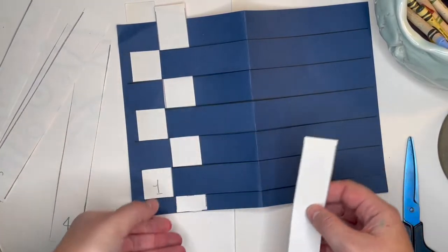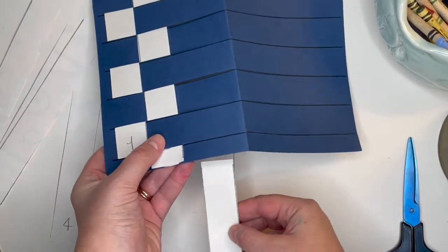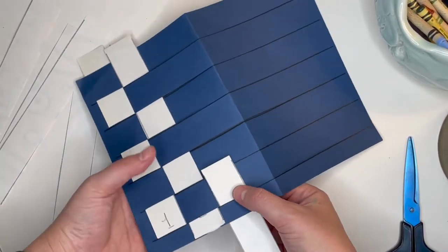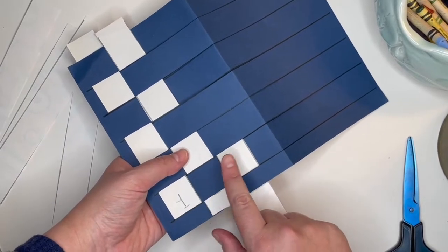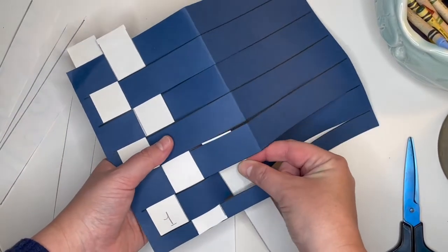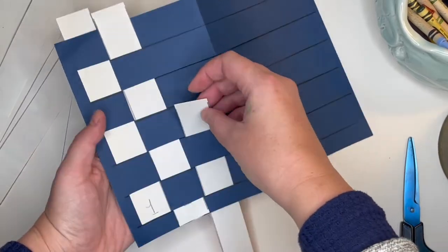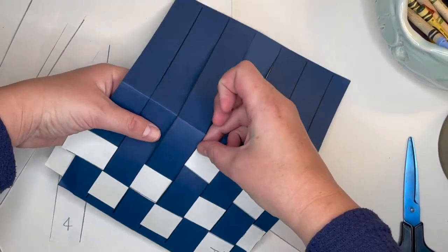Strip three. We are going every other paper. So notice how I've got white, blue, white. I know I'm doing it correctly if I have that repeating checkerboard pattern.